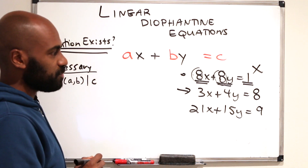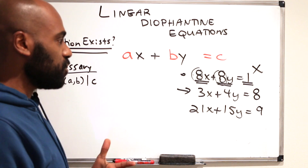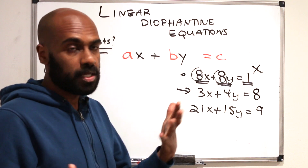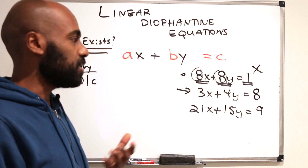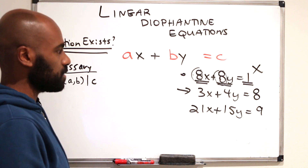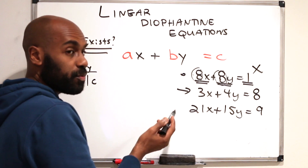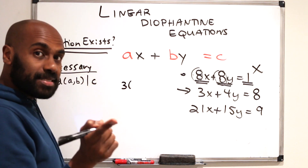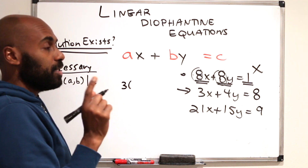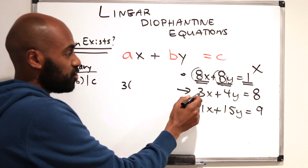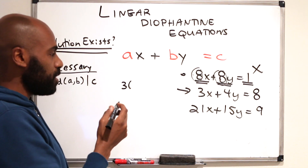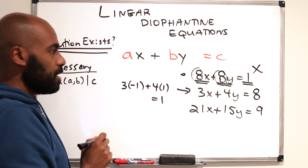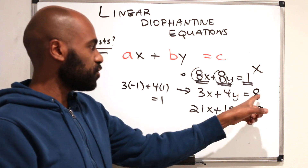Let's look at the example 3x + 4y = 8. You could guess: since 4 divides 8, make y = 2 and x = 0. But if the numbers get large, that's not a systematic approach. We know the GCD of 3 and 4 is 1. By last video's result — Bezout's lemma — the GCD can be written as an integer combination of the two numbers.